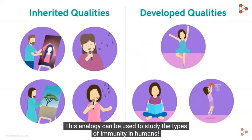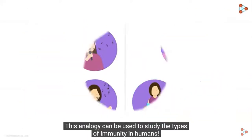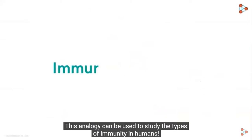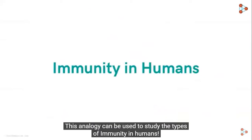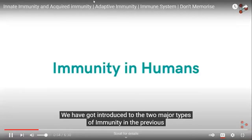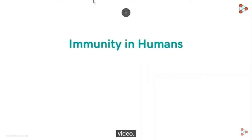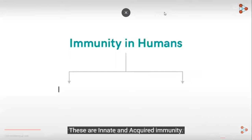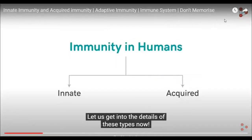This happens gradually over a period of time as and when new interests or needs are encountered. This analogy can be used to study the types of immunity in humans. We have got introduced to the two major types of immunity in the previous video. These are the innate and the acquired immunity.